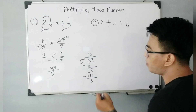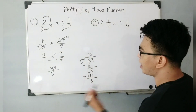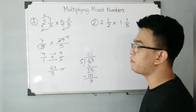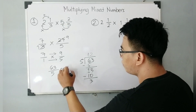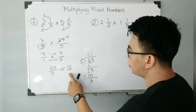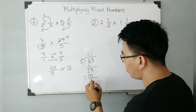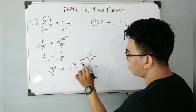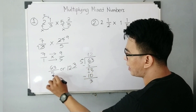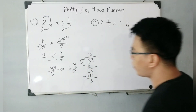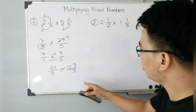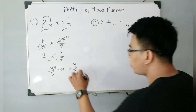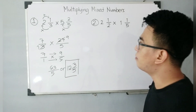So now you have a remainder. The equivalent mixed number of 63 over 5 is simply 12 — you use the quotient as your whole number. Then for the numerator, copy the remainder, which is 3. And for the denominator, copy the original denominator, which is 5. So the equivalent mixed number of 63 over 5 is 12 and 3 over 5. This will be the final answer for item number 1.